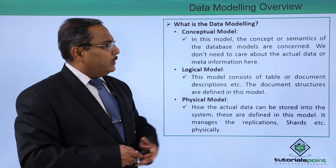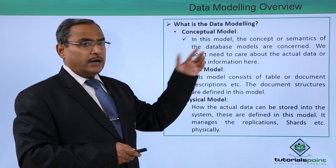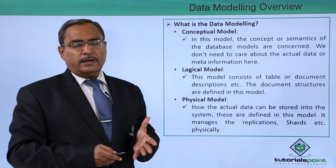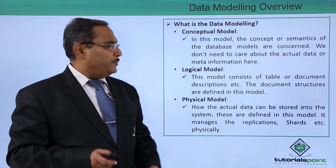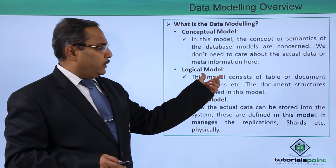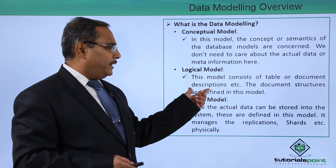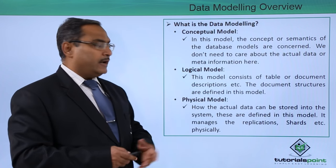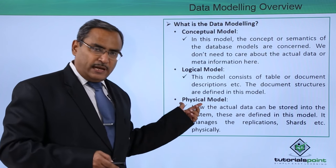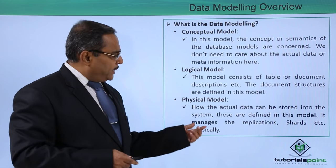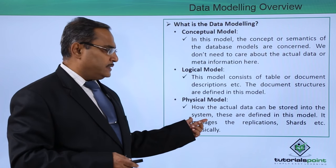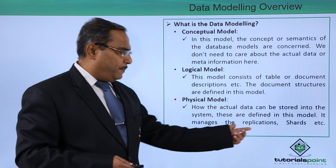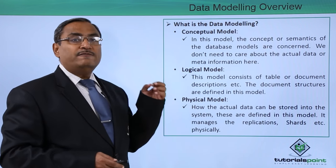In the conceptual model, the concepts or semantics of the data model are concerned — we do not need to care about the actual data and their required meta information. The logical model consists of table or document descriptions, and these document structures are defined in this model. The physical model deals with how the actual data can be stored into the system, and it manages replications, shards, et cetera, physically.